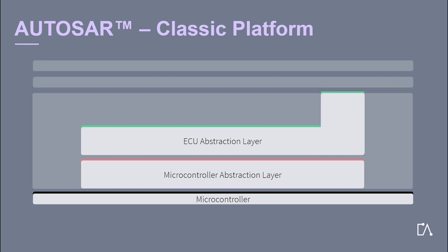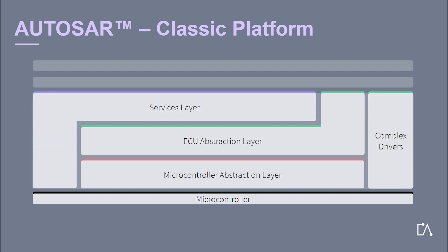The main task of the ECU Abstraction Layer is to make higher software layers independent of the ECU hardware layout. The Complex Drivers layer spans from the hardware to the runtime environment; its main task is to provide the possibility to integrate special purpose functionality. The Services Layer is the highest layer of the Basic Software, which also applies for its relevance for the application software. It offers, for example, diagnostic services and memory services, and its main task is to provide basic services for the application, runtime environment, and Basic Software modules.